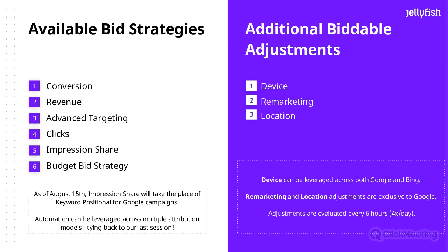Lastly, to close off the overall bid strategy section, tying back into our last session — automation can be leveraged across multiple attribution modeling. So if you did create those additional floodlight attribution models, in this case maybe data-driven or linear time decay, here's where you can leverage it. In your bid strategies, when you're selecting the conversion point, you can select multiple attribution models to allow for that data to be associated with that new strategy.